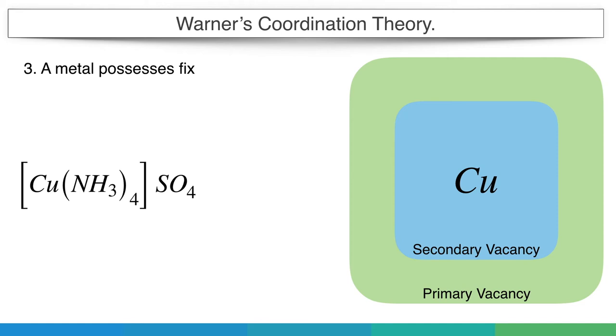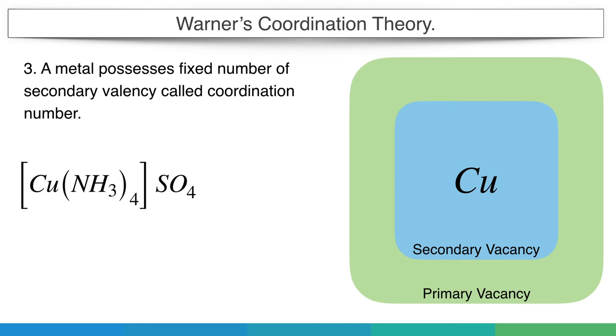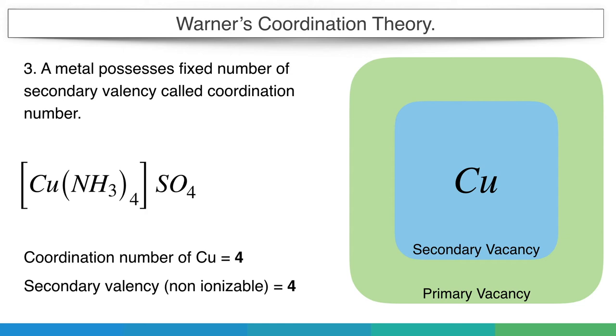Third, a metal possesses fixed number of secondary valencies called coordination number. As you have already noted here, in this complex, copper is coordinated with 4 ammonia ligands by coordination bonds. So its coordination number is 4, as it forms 4 coordinate bonds. Also, the secondary valency becomes 4, as it can form 4 bonds. So secondary valency is equal to the coordination number of the metal.